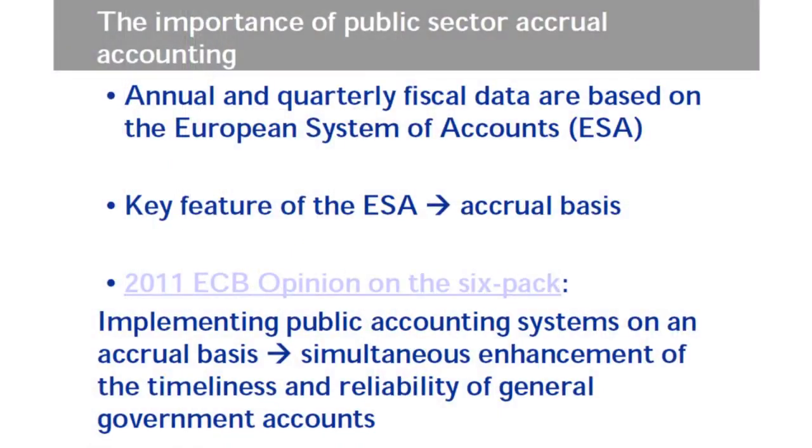As already mentioned, annual and quarterly fiscal data are based on the European System of Accounts. A key feature of the European System of Accounts is that they are recorded on an accrual basis. This is the reason why in our 2011 opinion on the six-pack, we thought it was important that public accounting systems on an accrual basis are implemented to simultaneously enhance the timeliness and reliability of general government accounts. If you have public accounting systems on an accrual basis, the input for the annual and quarterly fiscal data is done on the same basis, and therefore these outputs can be generated faster and with a higher degree of reliability.